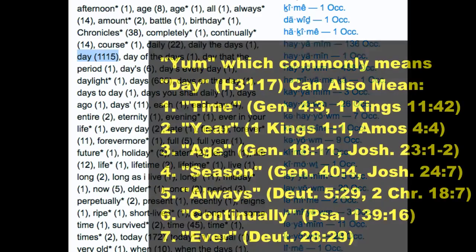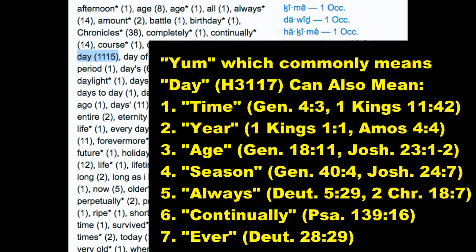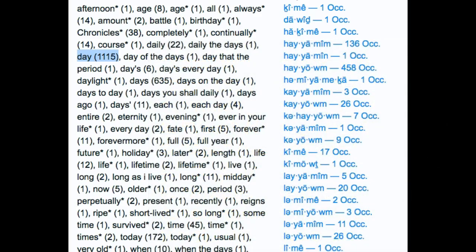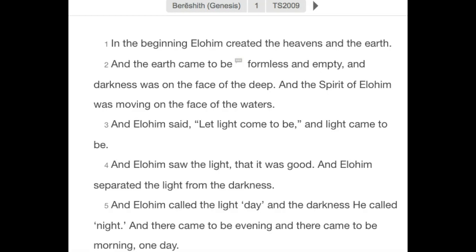This word YUM, which is commonly translated as 'day,' can also mean a bunch of other words in English. Did you know this word can also mean time, year, age, season, always, continually, and even ever? I've also listed some scriptures so you can see it for yourself. If you go to them in the Hebrew, you will actually see the word YUM or H3117 used there, yet it's translated many different ways in English. It's important to keep that in mind when we're trying to understand when days begin according to scripture.